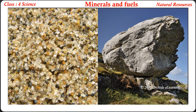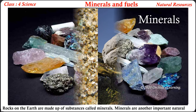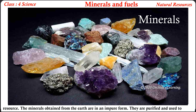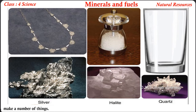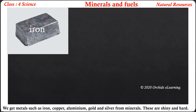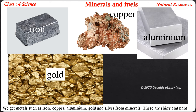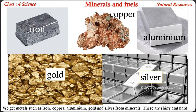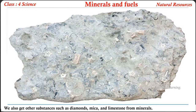Minerals and fuels. Rocks on the earth are made up of substances called minerals. Minerals are another important natural resource. The minerals obtained from the earth are in an impure form — they are purified and used to make a number of things. We get metals such as iron, copper, aluminium, gold, and silver from minerals. These are shiny and hard. We also get other substances such as diamonds, mica, and limestone from minerals.